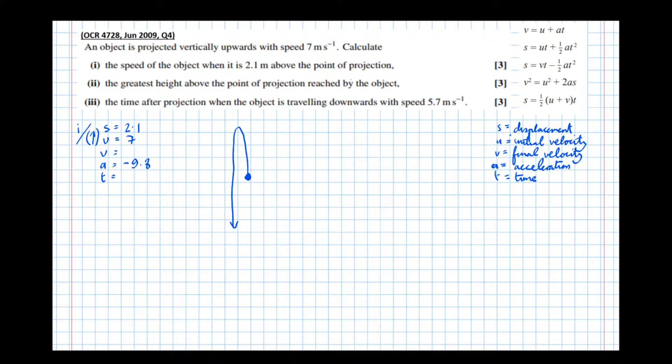V squared equals u squared plus 2as. Well, we need v. We've got u, we've got a, and we've got s. So that's the equation we need to use. V squared equals u squared plus 2as. So let's just write it down. V squared equals u squared plus 2as.